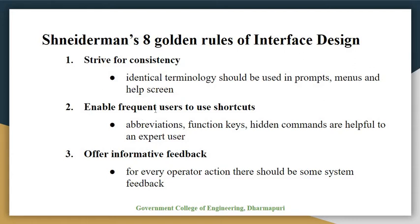The second golden rule is to enable frequent users to use shortcuts. As the frequency of use increases, so do the user's desires to reduce the number of interactions and to increase the pace of interaction. Abbreviations, function keys, hidden commands, and macro facilities are very helpful to expert users.